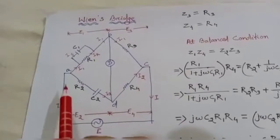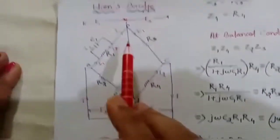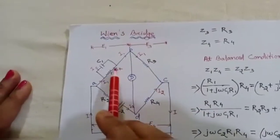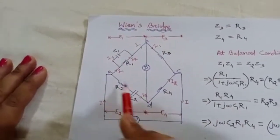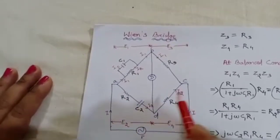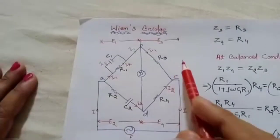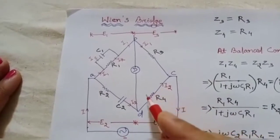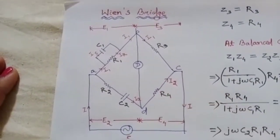Like all other bridges, Wien's Bridge also has four arms. In arm one we have a parallel combination of R and C. In branch two there is a series combination of R and C. Branch three is a simple resistance R3, and branch four is R4.